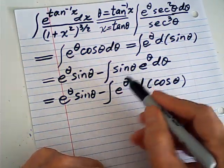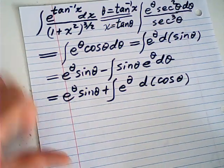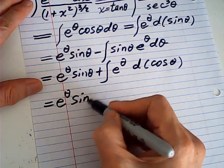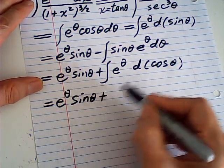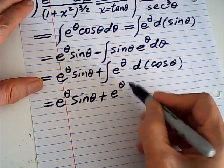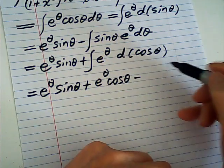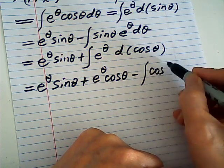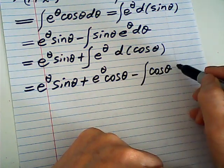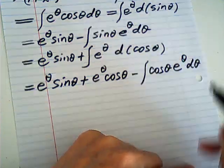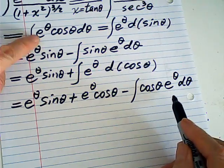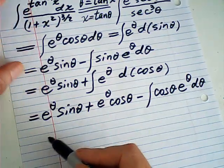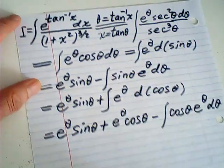I rewrite this as the integral of e to the power theta times d(cosine theta). Since d(cosine theta) is negative sine theta, we change to plus. This gives e to the theta times sine theta, plus uv minus vdu, where v is cosine and du is e to the theta d theta. That is exactly my original integral.